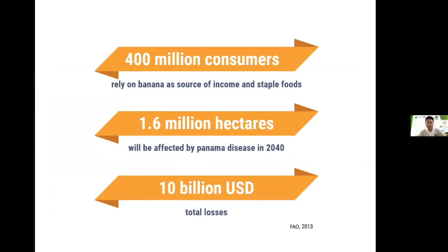Banana is a huge industry involving 400 million consumers in total. If we don't address the problem of Panama disease properly, 1.6 million hectares of land could be affected by Panama disease in 2040. This could account for 10 billion US dollars in losses, which is a huge sum of money. So a viable mitigation approach needs to be executed in order to address this problem.